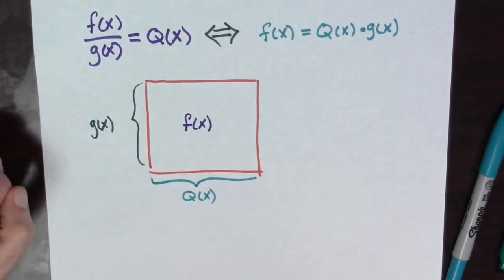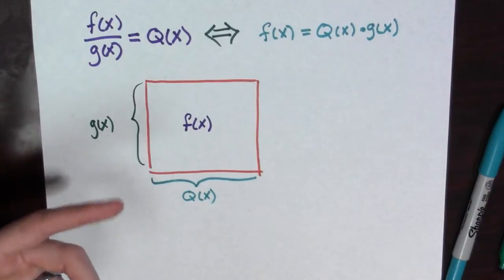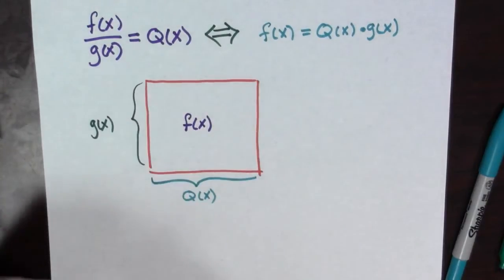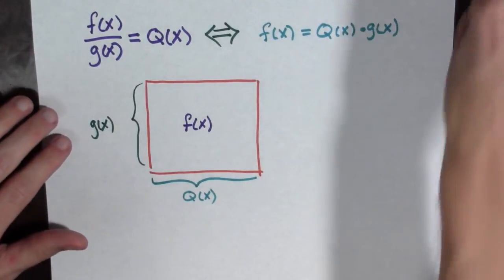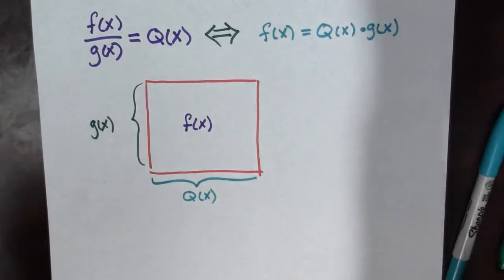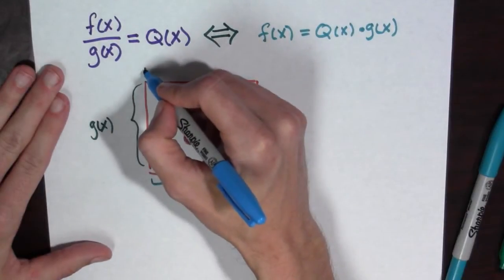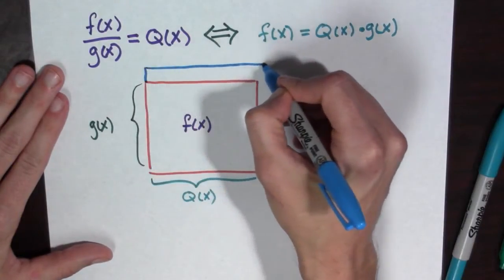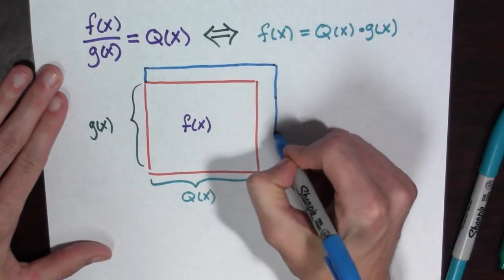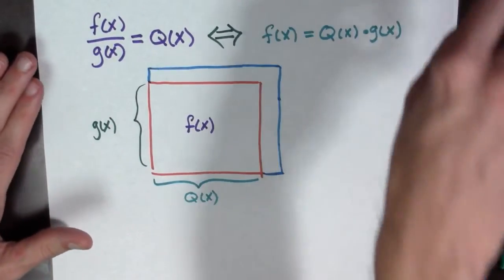Now the question is: how does the area change as x changes a little bit? What we're going to do is say, what if the area is increased by this much here and this much here? Here's the increase in the area. And we need this to be an increase as f increases.